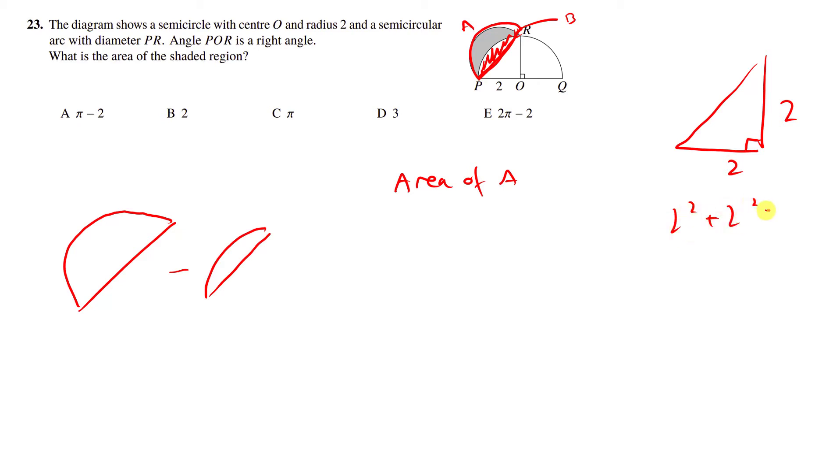And we're going to use Pythagoras to find this length, 2 squared plus 2 squared equals, let's call this h, h squared. So that's 8 equals h squared, h equals root 8. So this is root 8.